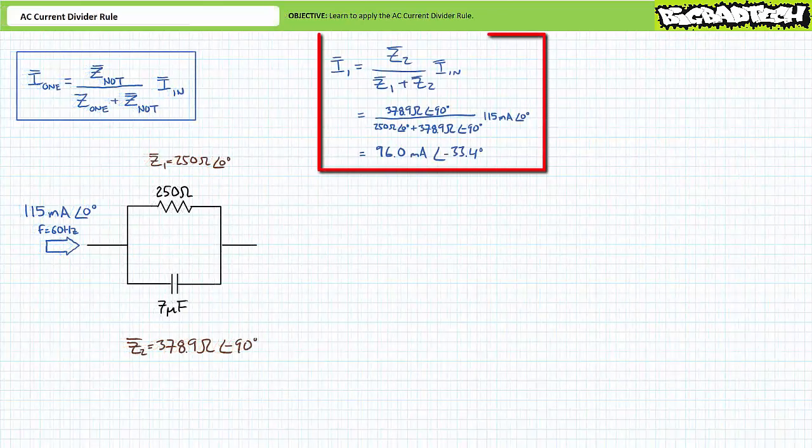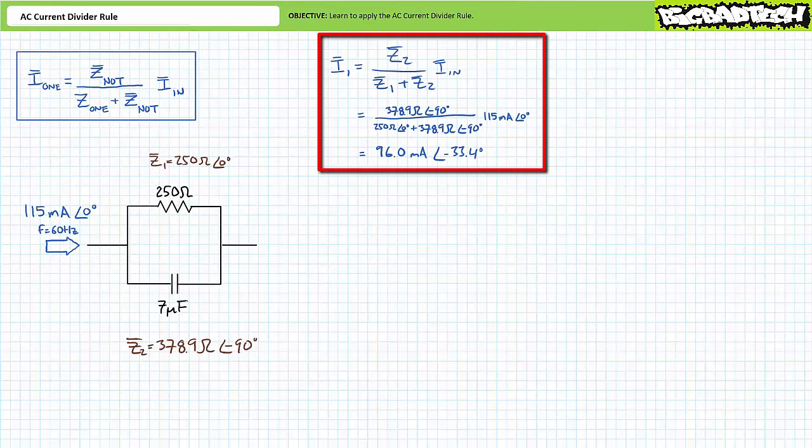The AC current divider rule set up to solve for I1 suggests that I1 equals Z2 divided by Z1 plus Z2 times incoming current IN. Substituting our given values yields I1 to be 96 milliamperes at an angle of negative 33.4 degrees.